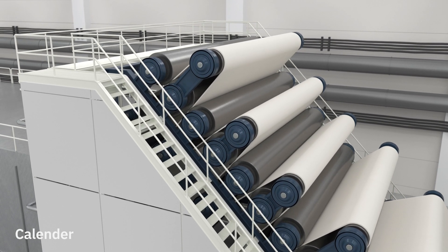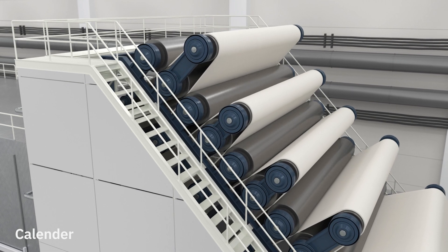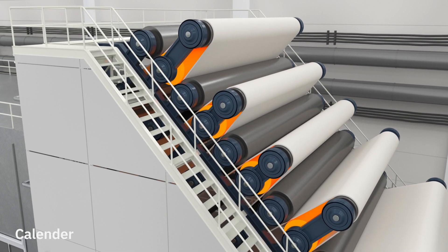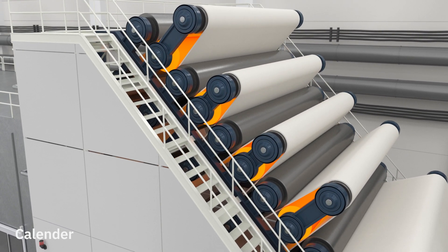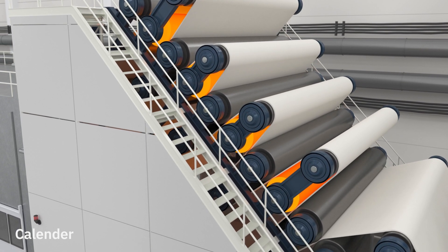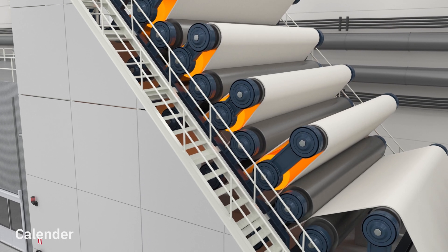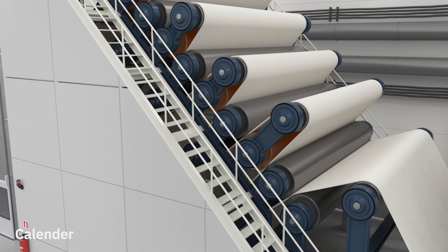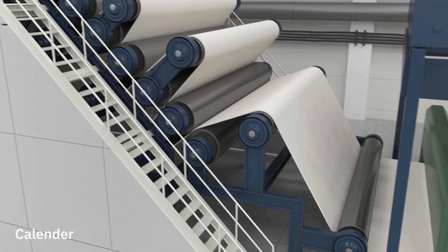The PM53 has a 10 roll calender with 9 nips. Four of the rolls are thermo rolls which can be heated up to 260 degrees Celsius by steam-heated oil. The heated rolls make the paper smooth and glossy. The caliper is also adjusted to the desired level.